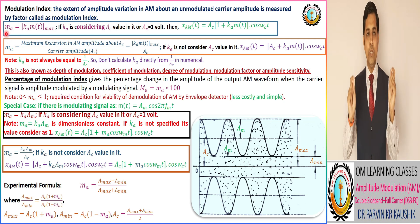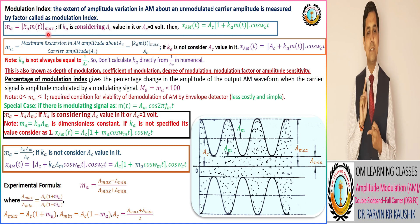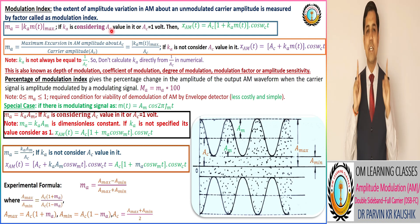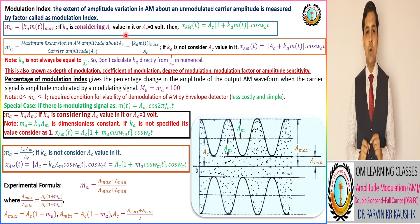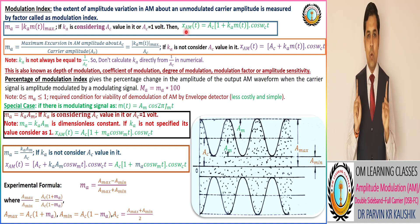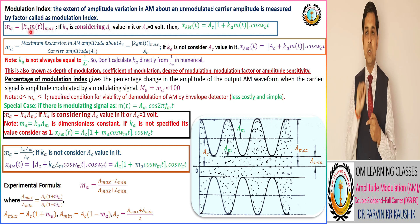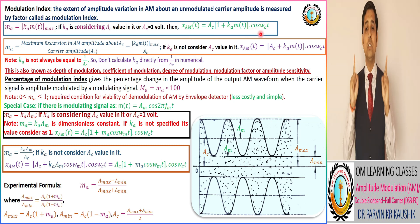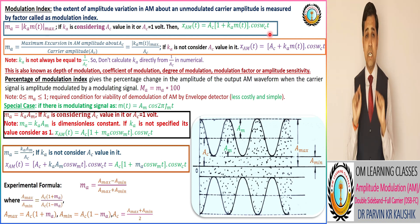In the first representation, the modulation index is equivalent to the maximum amplitude value of Ka multiplied by the message signal m(t). Here, Ka is the amplitude sensitivity factor, considering the amplitude of the carrier wave AC. This applies when AC equals 1. In this case, the modulated AM wave is: AC × (1 + Ka·m(t)) × cos(ωc·t).